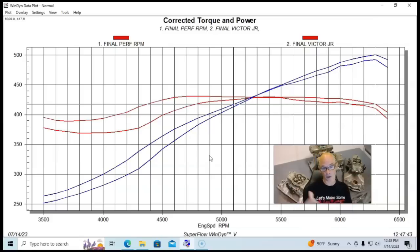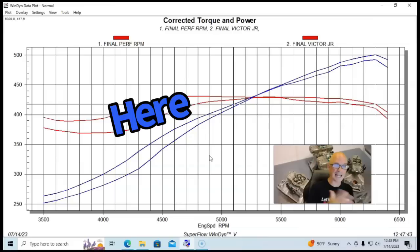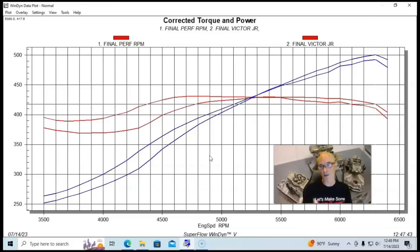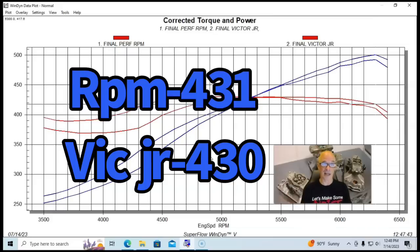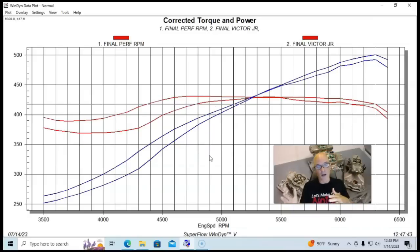It did indeed make more low-speed torque from 5300 and down. The dual plane was definitely the way to go. That was about the crossover point, and then above that the single plane made a little bit more. But if you look in terms of peak torque: 431 for the RPM Air Gap dual plane and 430 foot-pounds for the single plane. So they both made right at the same peak torque.